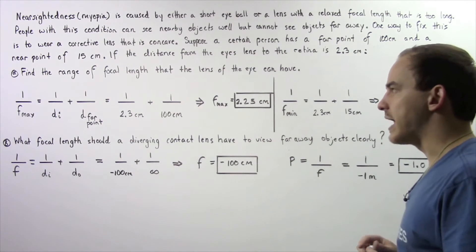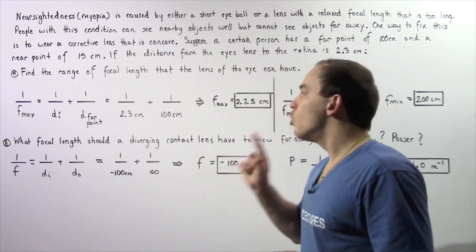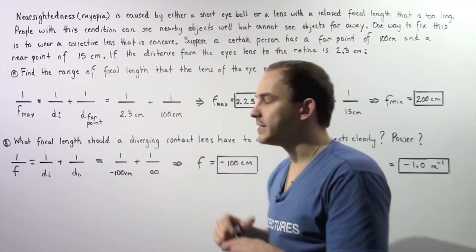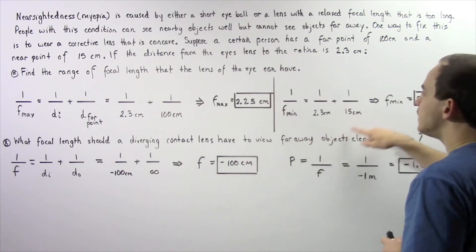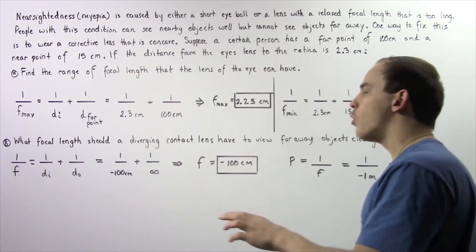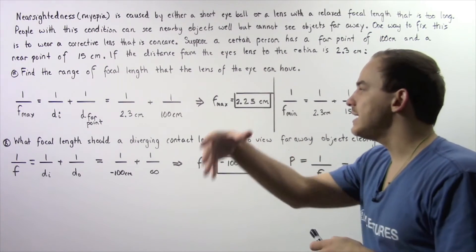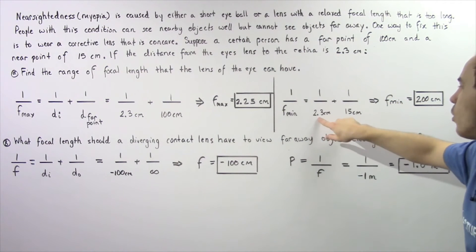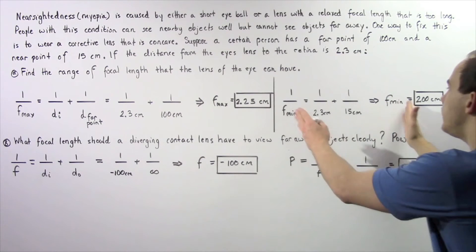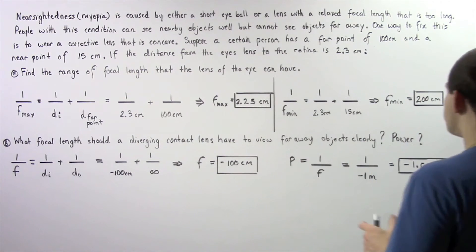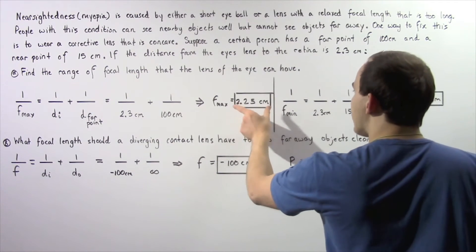For the minimum focal length, we place the object exactly at the near point. Applying the thin lens equation with the near point as the object distance: 1/2.3 + 1/15, we solve and get a minimum focal length of about 2.00 centimeters. So the focal length of the eye's lens ranges from approximately 2.00 centimeters to 2.25 centimeters.